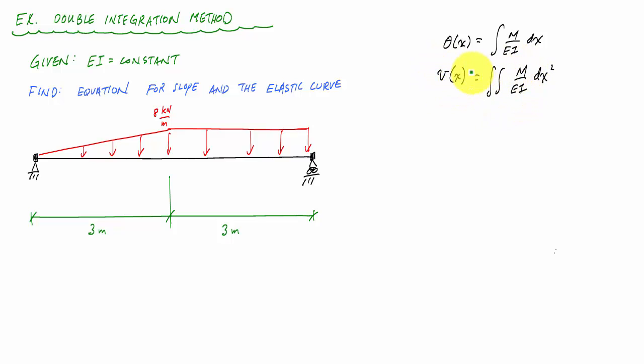The first thing we're going to do is our statics — calculating the reactions and then determining the moment functions so I can come up with curvature functions to integrate from. Here is my free body diagram. I've got a vertical reaction Ay, a horizontal reaction Ax, and then a vertical reaction By.